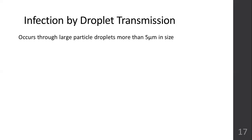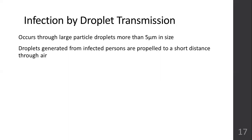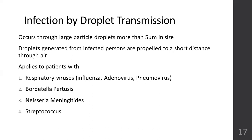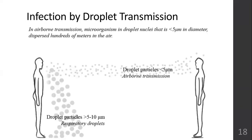Droplet transmission occurs through large particle droplets that are more than 5 micrometers in diameter. These droplets are generated from infected patients when coughing or sneezing but will not travel a long distance — they are propelled only a short distance and fall down naturally. This applies to patients with influenza, adenovirus, pneumovirus, Bordetella pertussis, diphtheria, meningitis, and streptococcal infections. The particles are heavy and cannot travel a long distance — within six feet, they will fall down.